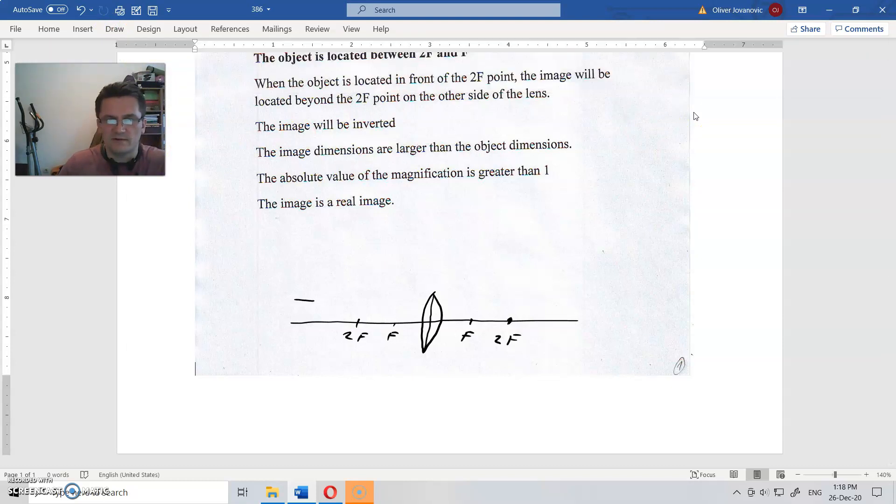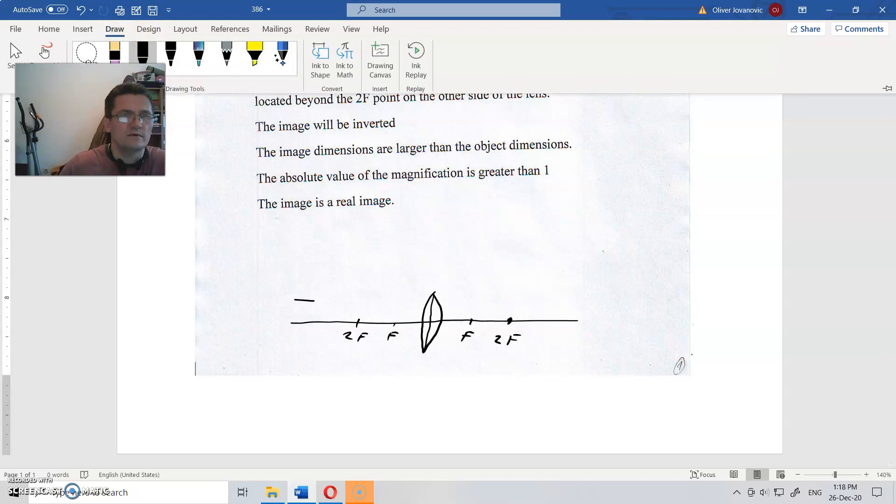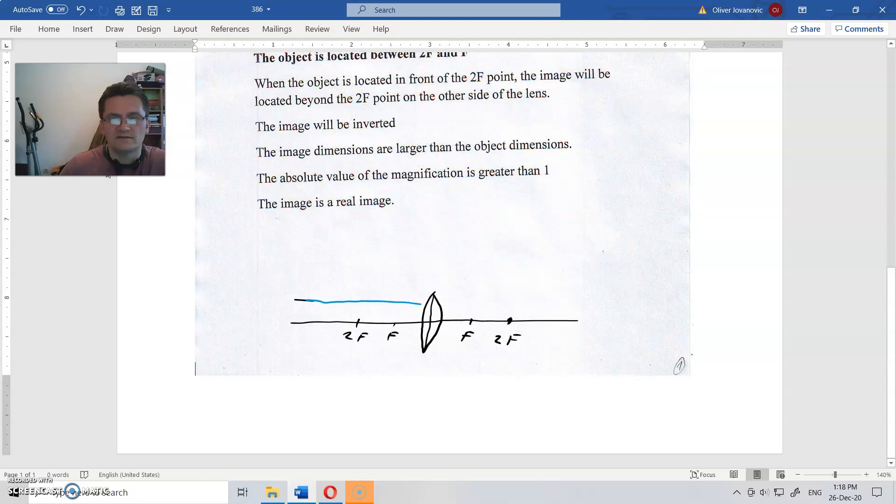This is a parallel ray coming to the lens, this parallel ray coming to the lens will go to the focal point.